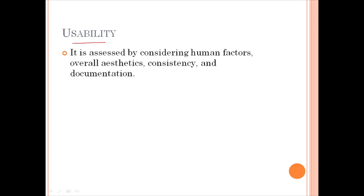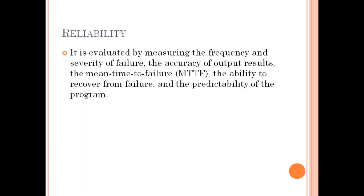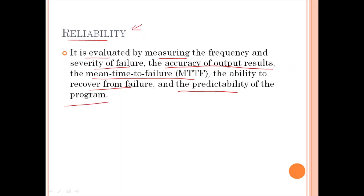Usability is assessed by considering human factors, overall aesthetics, consistency and documentation — all these aspects should be covered. Reliability is evaluated by measuring the frequency and severity of failure, the accuracy of output results, the mean time to failure, the ability to recover from failure, and the predictability of the program. So reliability of the software is evaluated by measuring these things.